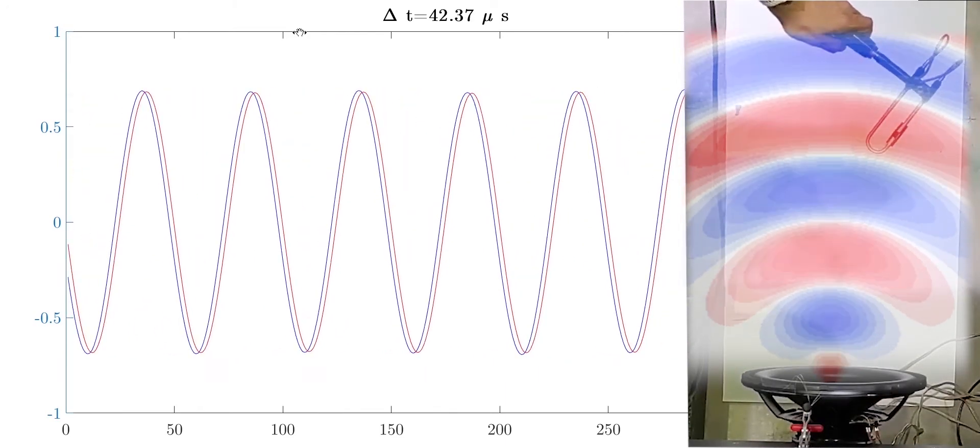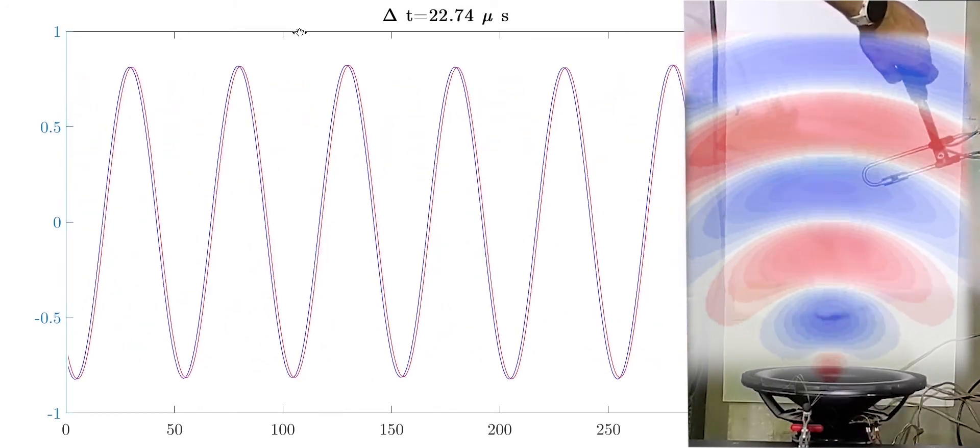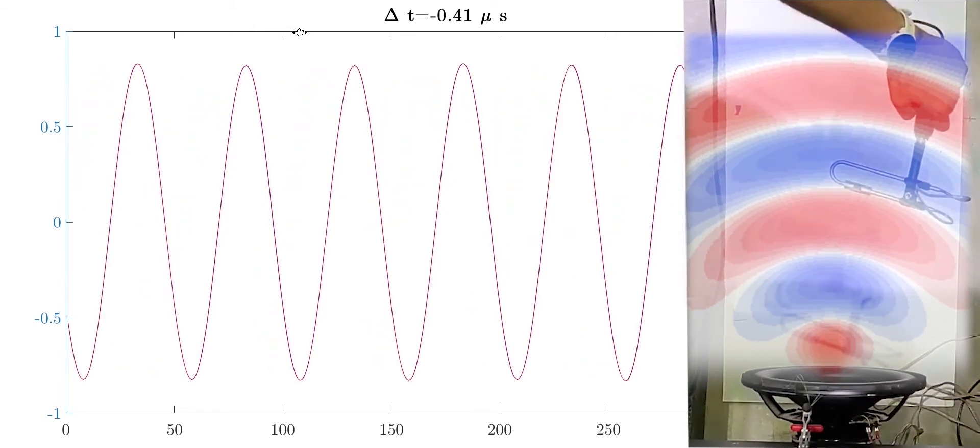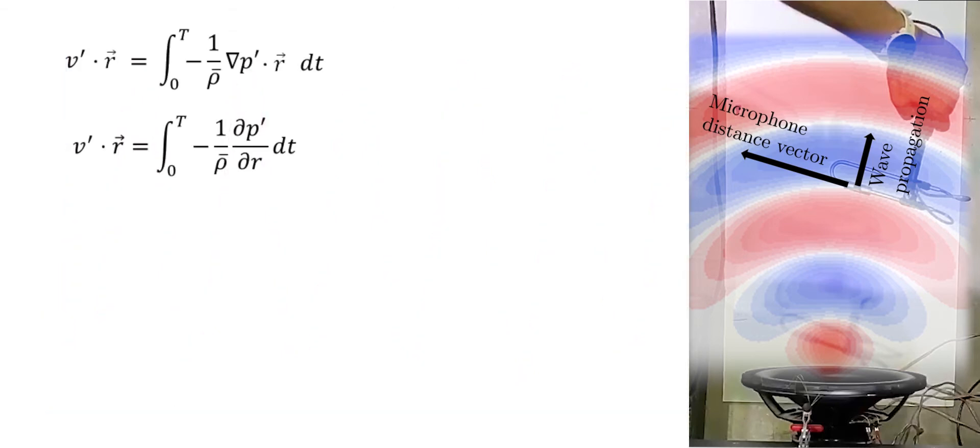So now as I rotate the probe, the delay between the two microphones becomes shorter and shorter, and then eventually it becomes very close to zero. We can see that the delay is zero when the two microphones are perpendicular to the wave propagation direction. From our previous equation, we can clearly see that if the two microphones are seeing the same pressure, the velocity will integrate to zero.